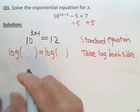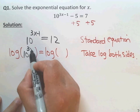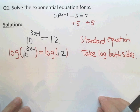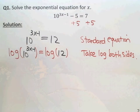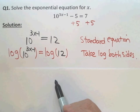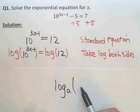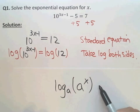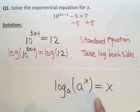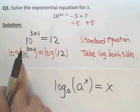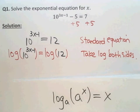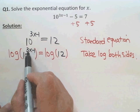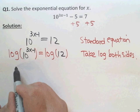What is inside? The exponent is 3x minus 1, and the right side is 12. Why do we take this? Because we have the inverse rule. The inverse rule is: log base A of A to the x equals x. So here the base is 10, so taking log base 10 simplifies the left side. We simplify and the left becomes just the power, which is 3x minus 1.